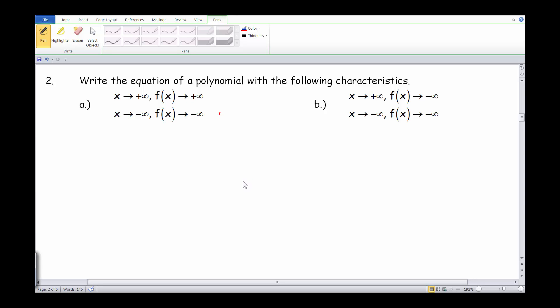Here we are at the warm-up part 2a from our 5.2 number 27 notes. We're asked to write an equation of a polynomial with the following characteristics. Now in just looking at this first one a, we see that as x goes towards positive infinity, f of x is rising towards positive infinity.